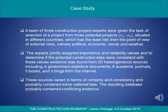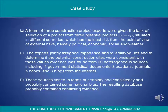Case study: A team of three construction project experts were given the task of selecting a project from three potential projects — New 1 to New 3 — situated in different countries, which has the least risk from the point of view of external risks, namely political, economic, social and weather. The experts jointly assigned importance and reliability values, and to determine if the potential construction sites were consistent with these values, evidence was found from twenty heterogeneous sources, including four government statistical documents, eight academic journals, five books and three blogs from the internet.